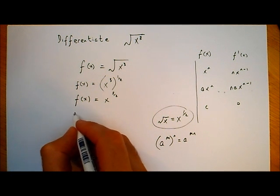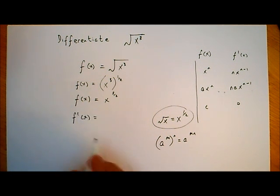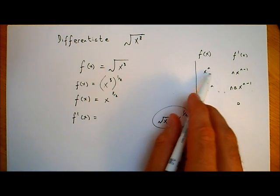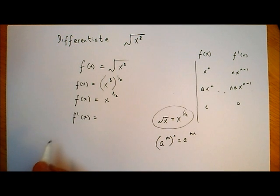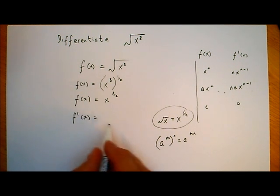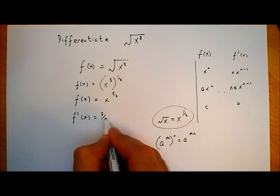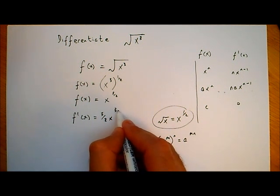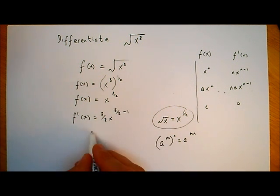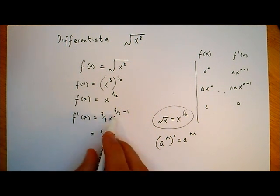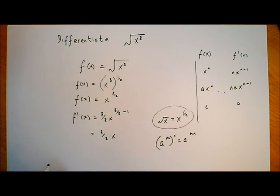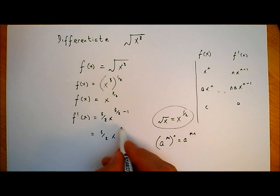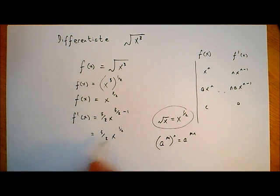So f dash of x will just equal n times x to the power of n minus 1. With n equal to three over two, it's going to be three over two times x to the power of three over two minus one. We can tidy that up: three over two minus one gives us one over two, so we get three over two times x to the power of a half.